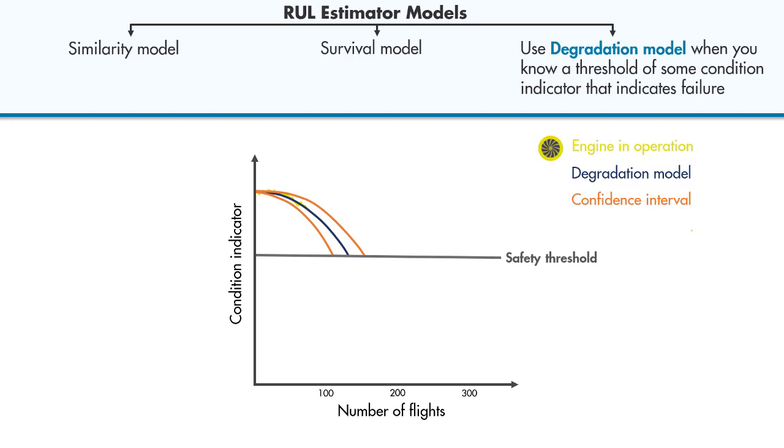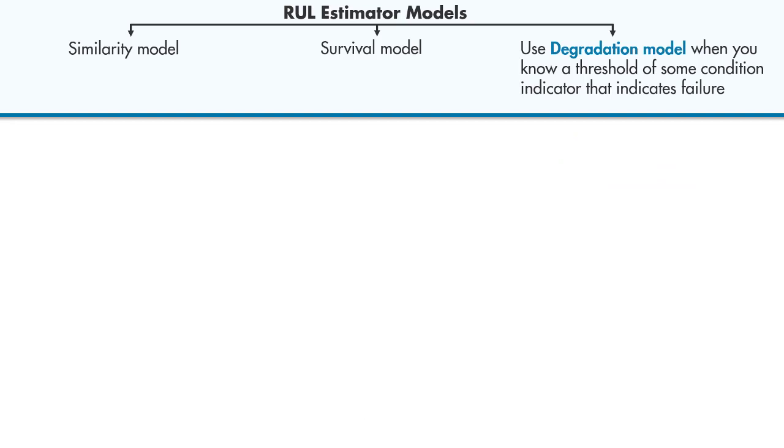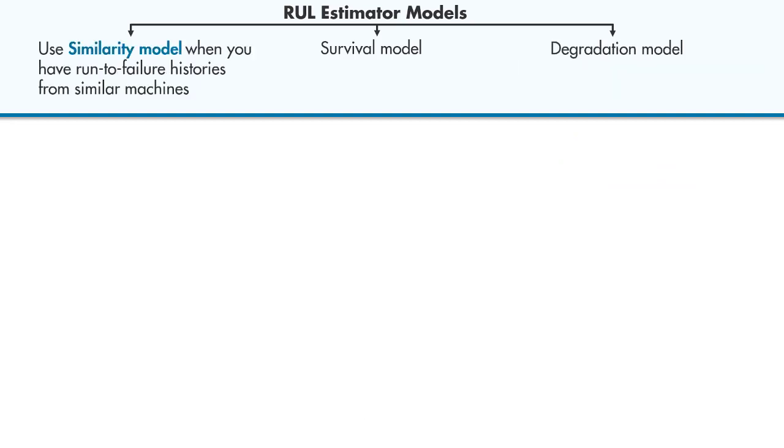This way, we can statistically estimate how many cycles there are until the condition indicator crosses the threshold, which helps us estimate the remaining useful life. The third common way to estimate RUL is to use similarity models.